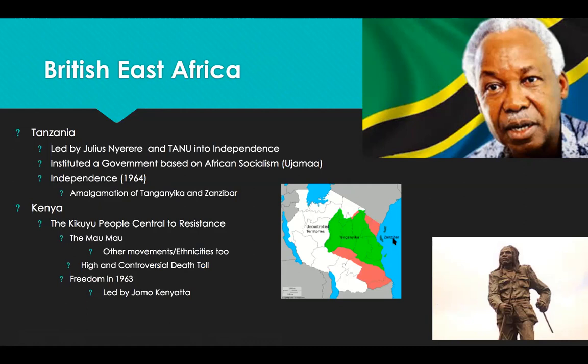Like many post-colonial thinkers and leaders, Nyerere sought to establish a break from the capitalist system that had grown synonymous with colonialism, and thus initiated a system of nation-building called Ujamaa — virtually an African system of socialism. Conversations have been had about its successes and failures, with the summation that ultimately Ujamaa was a cultural success, but not so much an economic success. So that's a little bit about Tanzania.